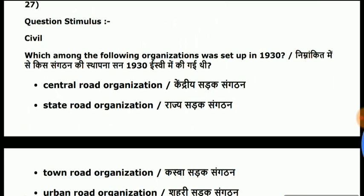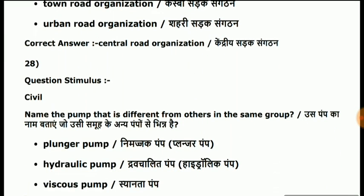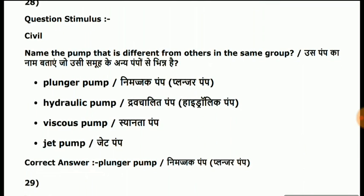Question 27: which among the following organizations was set up in 1930? The answer is Central Road Organization. This is the transportation subject of the highway. Question 28: name the pump that is different from others in the same group. The answer is plunger pump.